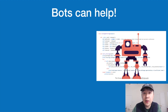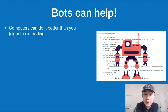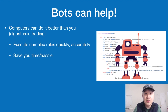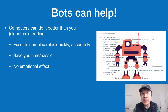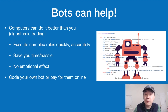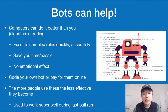Bots are a big part of arbitrage and can help considerably, because computers can do algorithmic trading better than us. They execute complex rules quickly and accurately, save you time so you don't have to sit at your computer all day manually finding and executing trades, and they aren't prone to emotional decisions — if coded properly with safeguards, they won't panic sell or panic buy. You can code your own bot if you're a programmer, or subscribe to one online, but be wary of scams. The more people use these bots, the less effective they become — they worked especially well during the last bull run but there's less opportunity now.